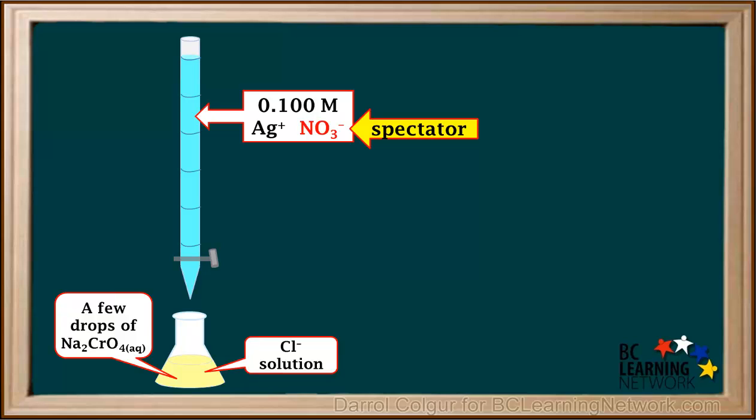The nitrate ion does not form any precipitates. It's a spectator ion here, so we'll just delete it from our discussion and tidy up a bit. So, you can think of the solution in the burette as a source of Ag+ or silver ions.